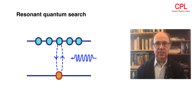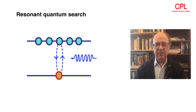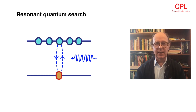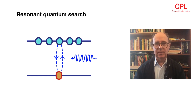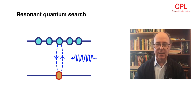The physical implementation of this involves looking for one state of lower energy. You don't know the state in advance, but one state of lower energy among n states, all of which otherwise have equal energy. And this is a perfect problem for quantum resonance, which is very good at homing in on states that have a definite and different energy.